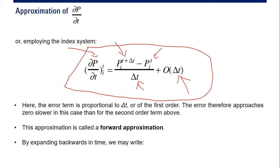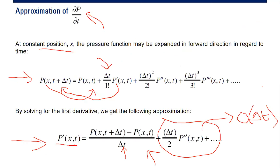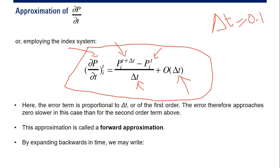The error term is proportional to delta t, or of the first order. The error therefore approaches zero more slowly than for the second order term. For example, if delta t is 0.1, that's just 0.1 error. Whereas if it were delta x squared, 0.1 squared becomes 0.01 — a much smaller error. When the order is only first order, the error is relatively large. This approximation is called the forward expansion.